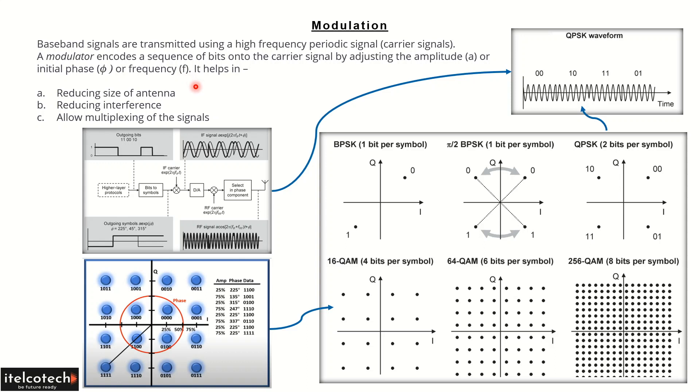Modulation is helping in different ways. One is reducing the size of antenna. If we have to send a smaller frequency information, we need to have a large size of antenna in that case.